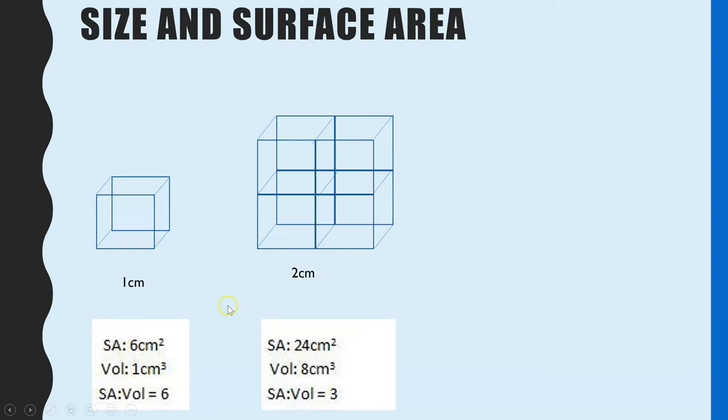So if we double the size of one of the length, so now instead of one centimeter, we have two centimeters. And we go through the same idea. Surface area, so we need to work out the surface area of one side of the cube. So two times two. And then there's six faces to the cube.